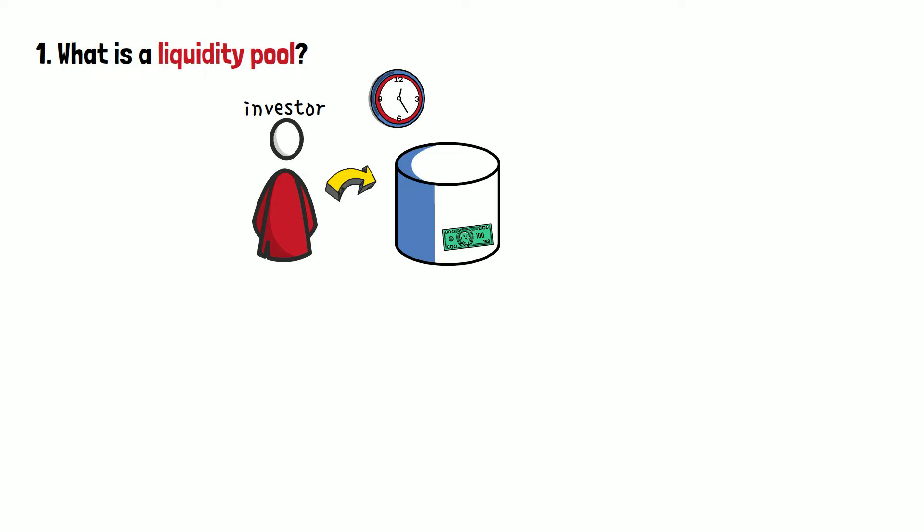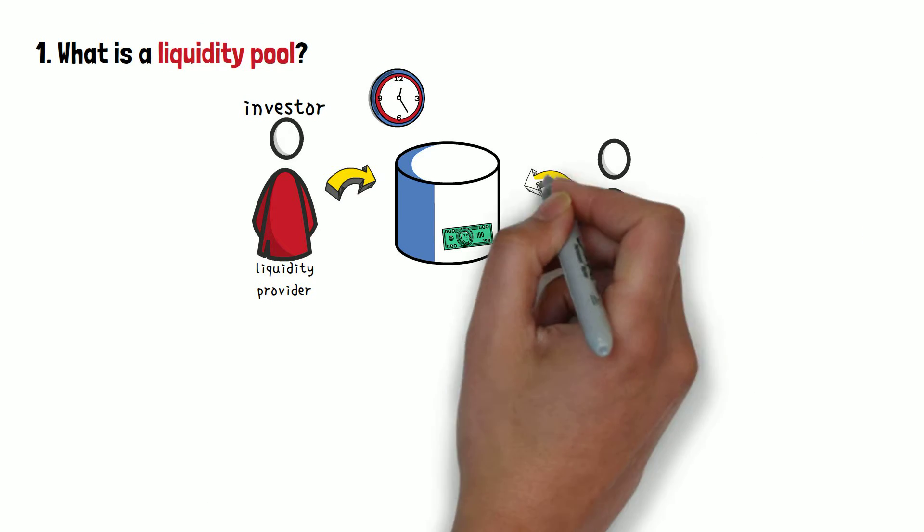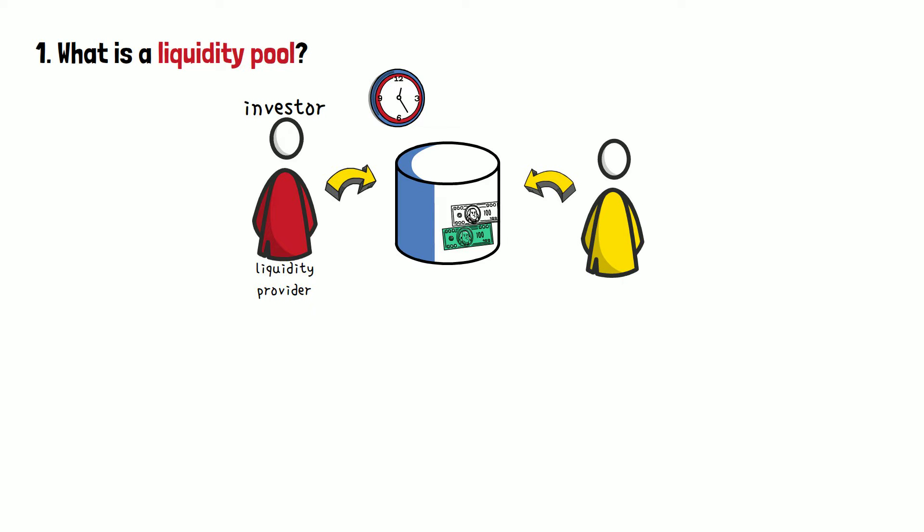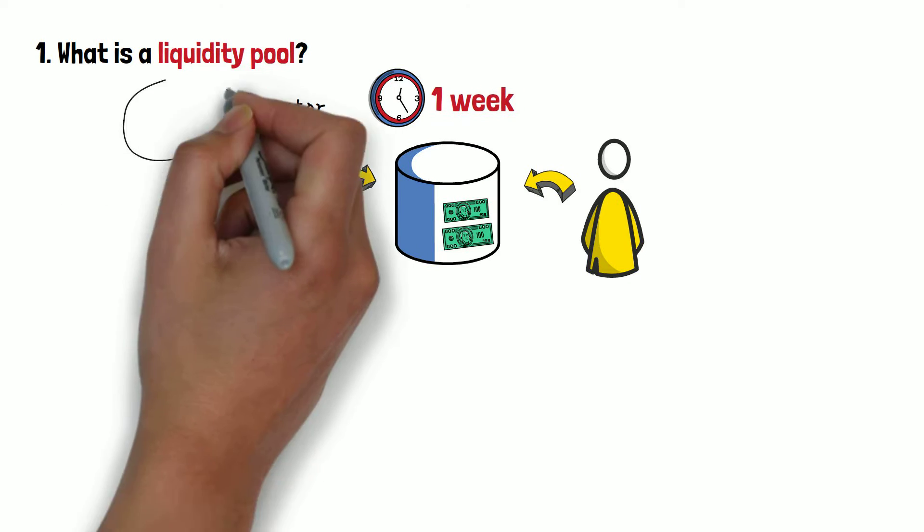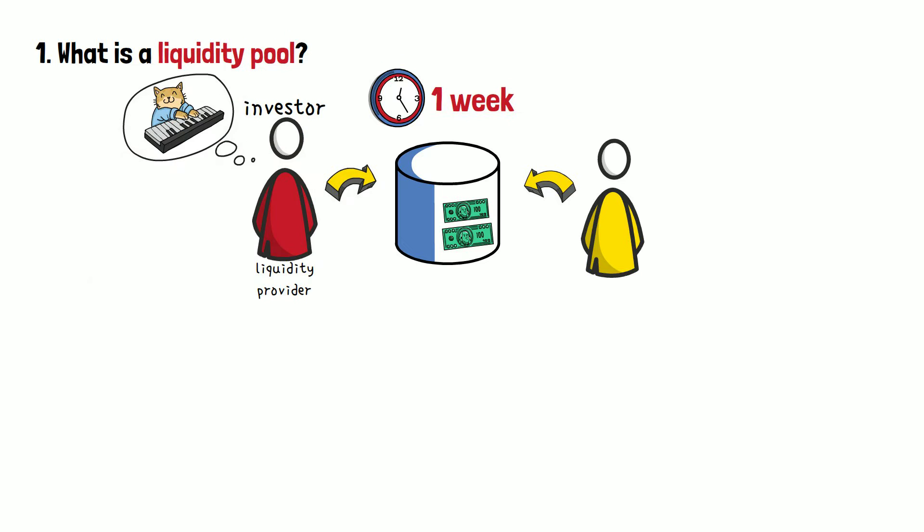If you do so, you'll be called a liquidity provider. Referencing the example given at the beginning of the video, imagine that you and your friend decide to throw your $100 bills into a pot for a week. After a week, you need that money for, let's say, a new keyboard. Well, liquidity pools allow you to take your money out, usually without any problems, at any point in time.